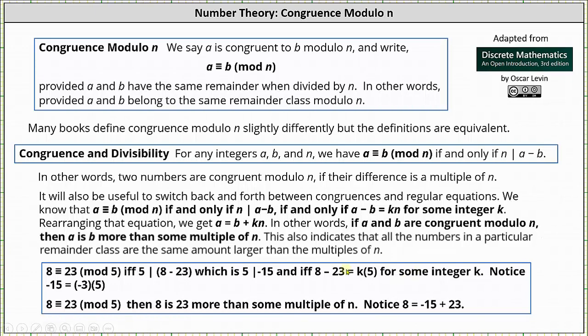Let's look at a concrete example. Let's go back to 8 and 23 which we know are congruent mod 5. 8 is congruent to 23 mod 5 if and only if 5 divides 8 minus 23, which is 5 divides negative 15, which of course is true, and if and only if 8 minus 23 is equal to k times 5, meaning 8 minus 23 is some multiple of 5 for some integer k. And notice 8 minus 23 is negative 15 and negative 15 is equal to negative 3 times 5.